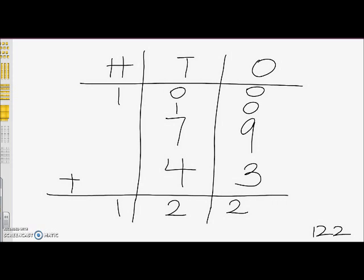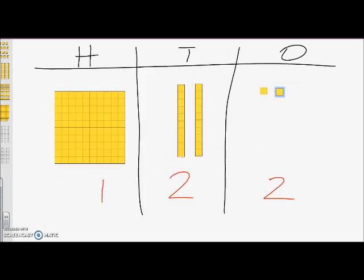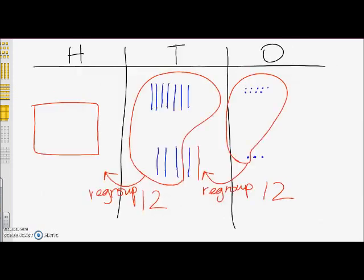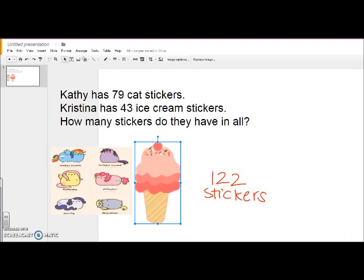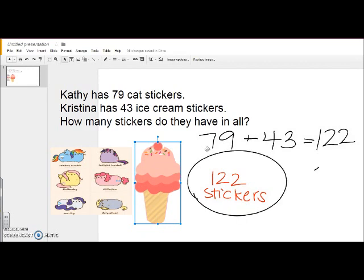As you can see, we moved from concrete to pictorial to the abstract model and received the same answer each time. Let's go back to our problem. Our number sentence is 79 plus 43 equals 122. Our answer would be: Kathy and Christina have 122 stickers in all.